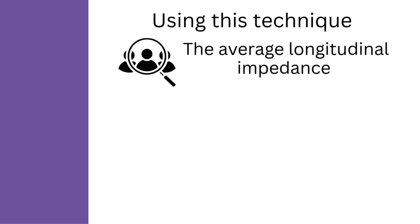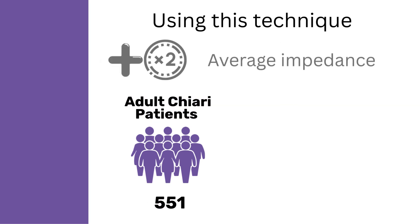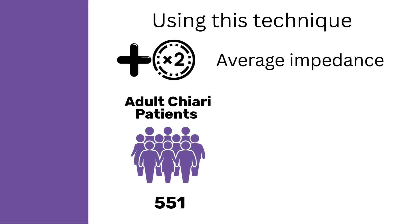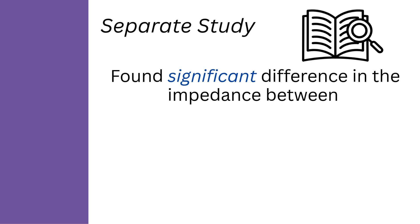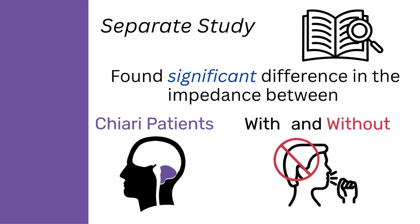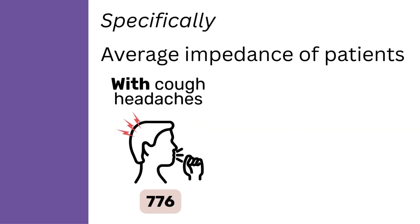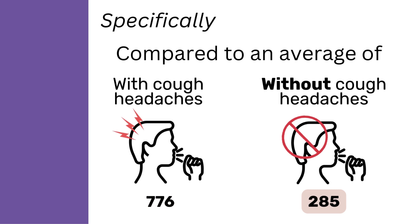Using this technique, they found that the average longitudinal impedance among adult Chiari patients was 551, which was more than double the average impedance of healthy volunteers at 220. In a separate study, they also found there was a significant difference in the impedance between Chiari patients with and without cough headaches. Specifically, the average impedance of patients with cough headaches was 776, compared to an average of only 285 for patients without cough headaches.